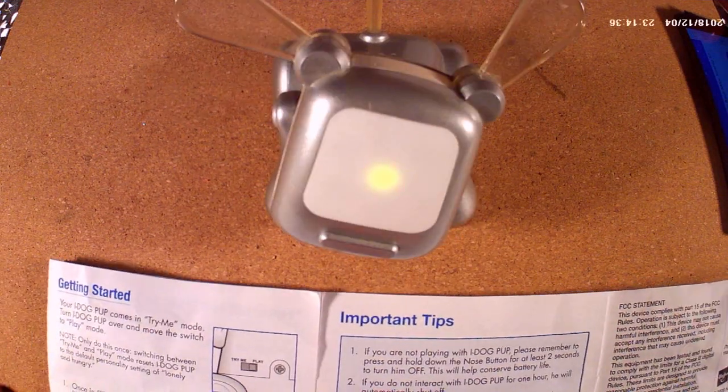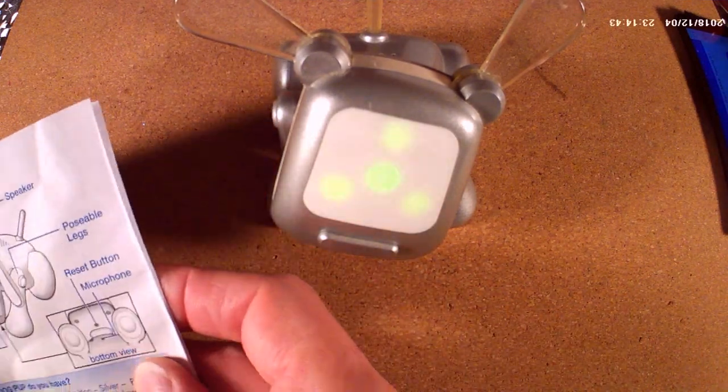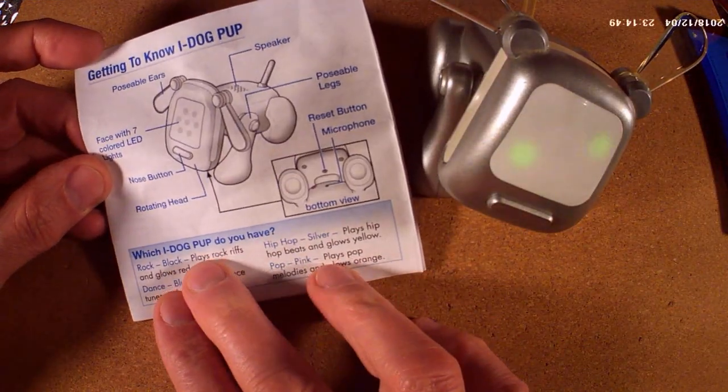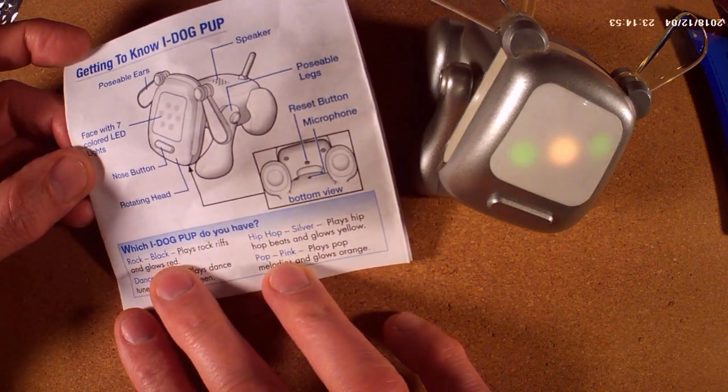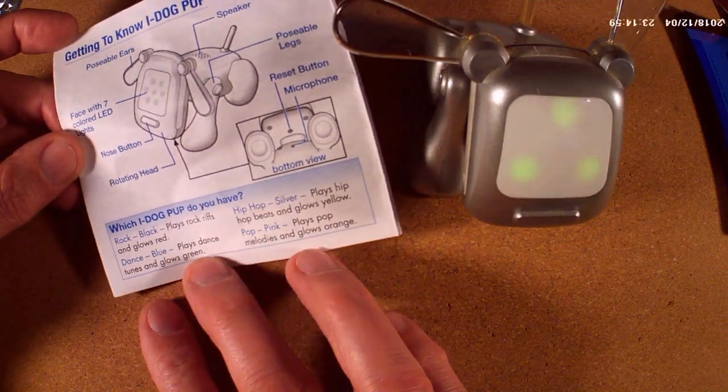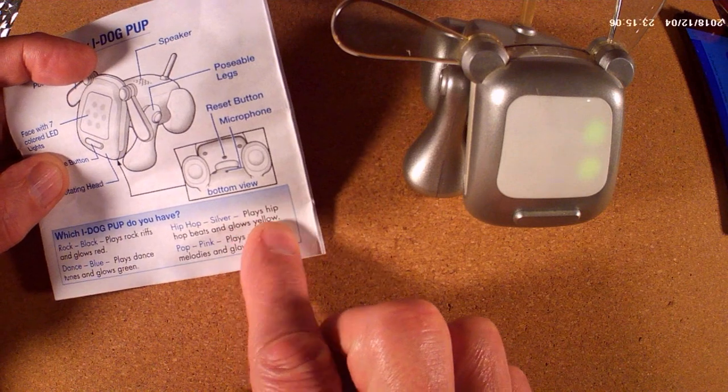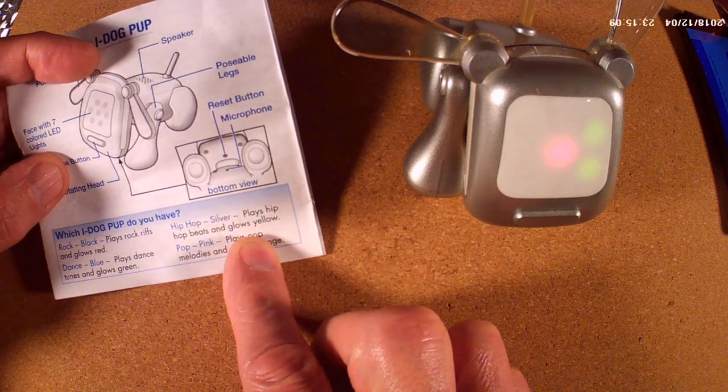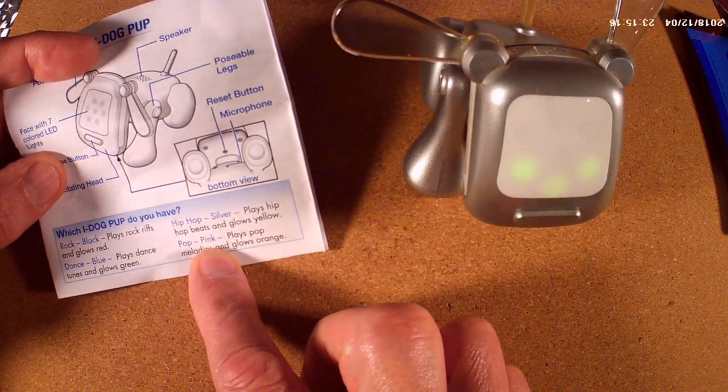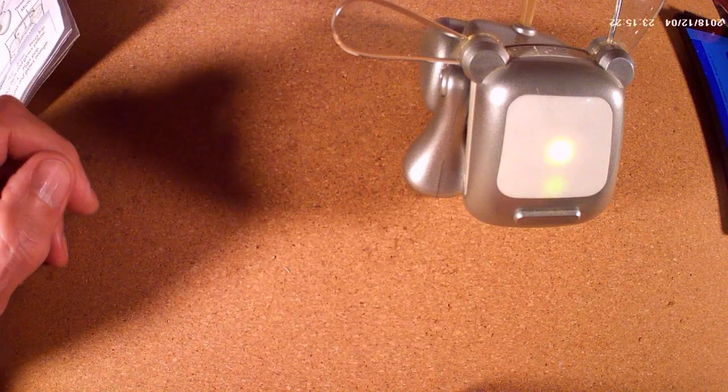And there was one other bit I spotted. Which eye dog pup do you have? Rock is black and plays rock riffs and glows red. Dance is blue, plays dance tunes and glows green. Hip hop is silver, so he must be hip hop. He plays hip hop beats and glows yellow. Yeah, alright. Well, certainly not pink, is he? Pop is pink and plays pop melodies and glows orange. I haven't actually noticed him glowing, to be honest.